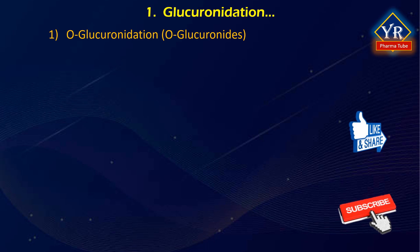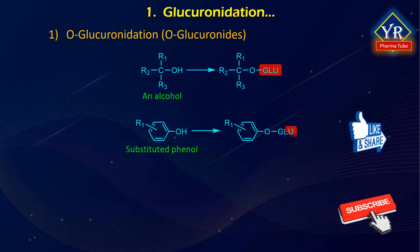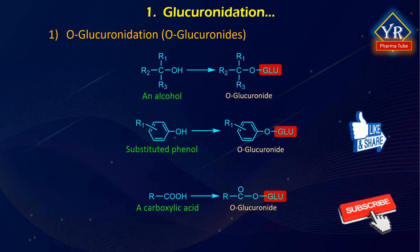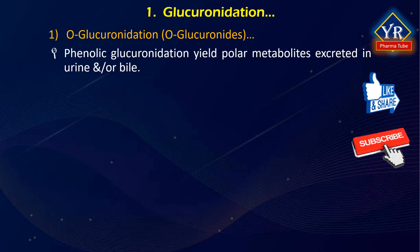O-glucuronidation: the most common compounds for O-glucuronidation have a hydroxyl group, that is alcohol, phenol, or carboxylic acid, that lead to the formation of O-glucuronides. The glucuronides of alcohols and phenols are called ether glucuronides because an ether linkage is formed between the drug and glucuronic acid, whereas the glucuronides of carboxylic acids are called ester glucuronides. A frequent metabolic reaction of phenolic xenobiotics is their glucuronidation to yield polar metabolites excreted in urine and/or bile.